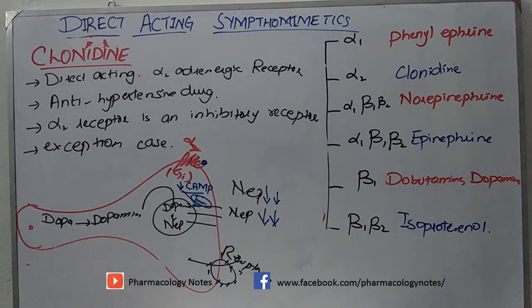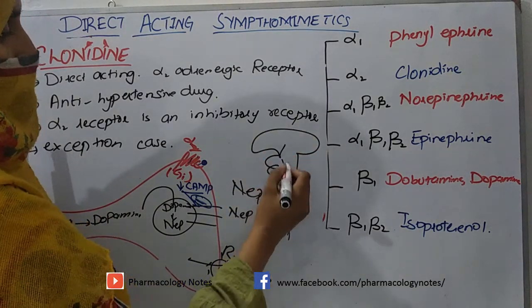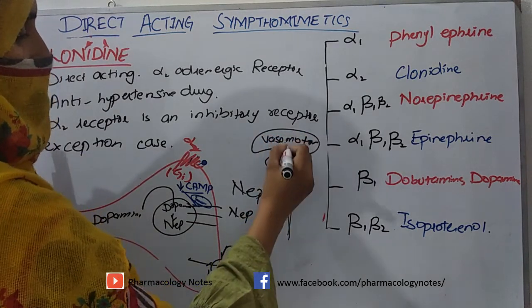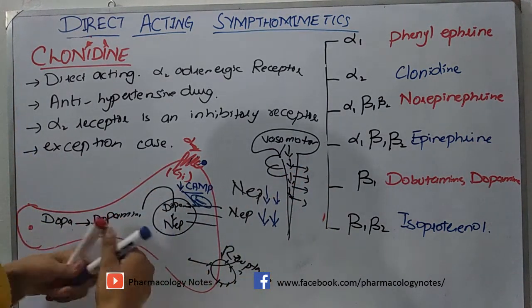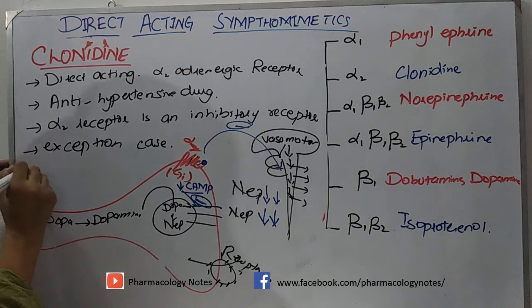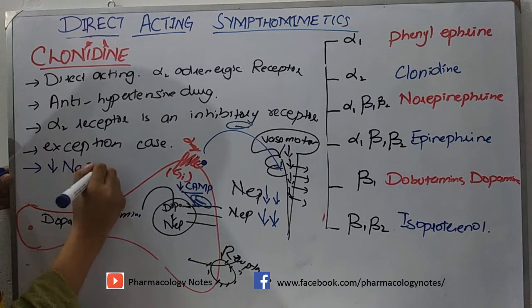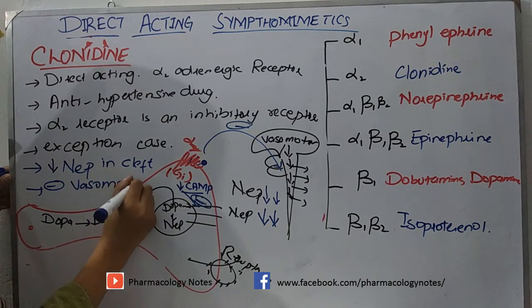This alpha-2 receptor is presynaptic. It acts like an eye of the synaptic cleft — when you stimulate it, it reduces the machinery for norepinephrine release. Clonidine also causes inhibition of the vasomotor center in the central nervous system, which will inhibit the vasomotor center, diminishing the polyneuronal pathway and sympathetic outflow. So this clonidine decreases norepinephrine in the cleft and blocks the vasomotor center.